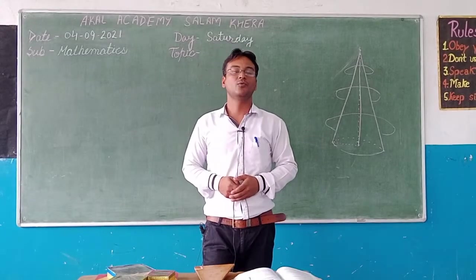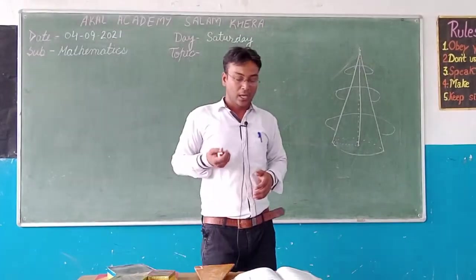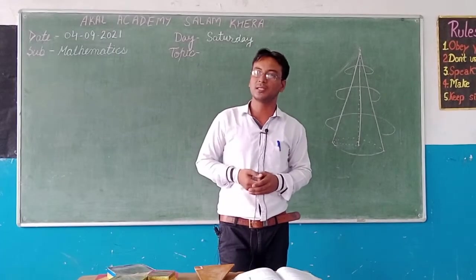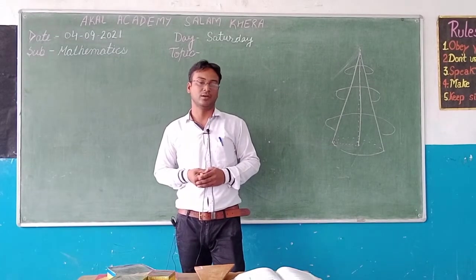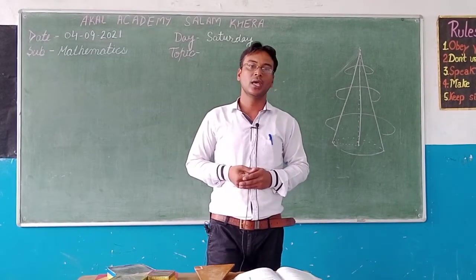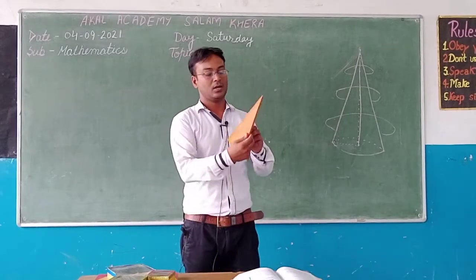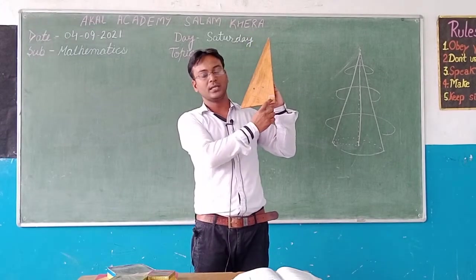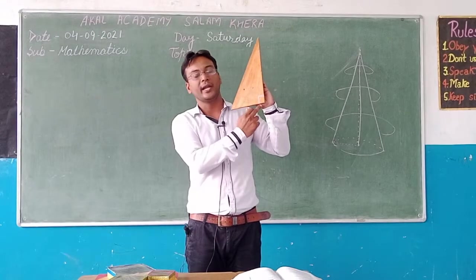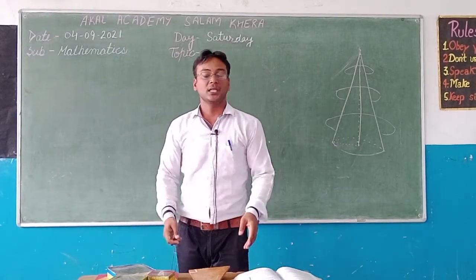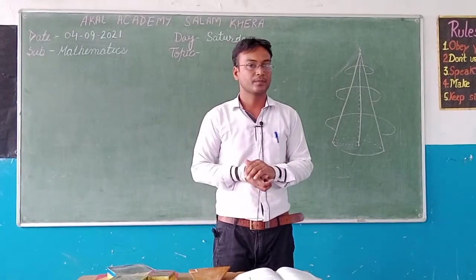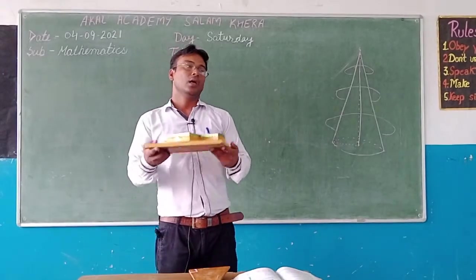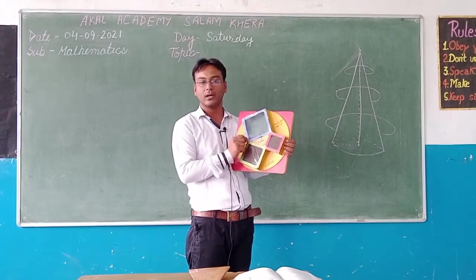Good wishes to all and welcome again to math class. Students, you have already studied about triangles in a previous class. There are three types of triangles according to their sides or according to their angles. This is the right angle triangle, due to one angle being 90 degrees. The Pythagorean theorem can be used in a right angle triangle, and I have one model of a right angle triangle that can prove how it works.